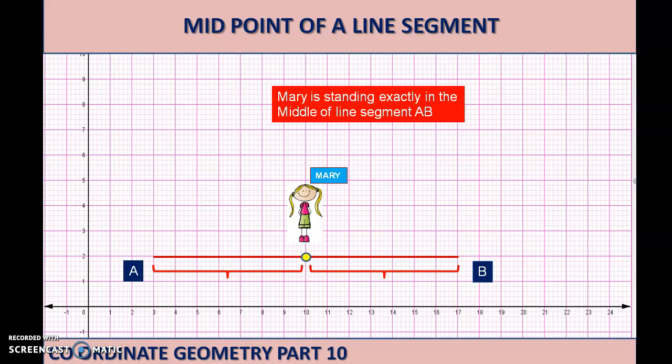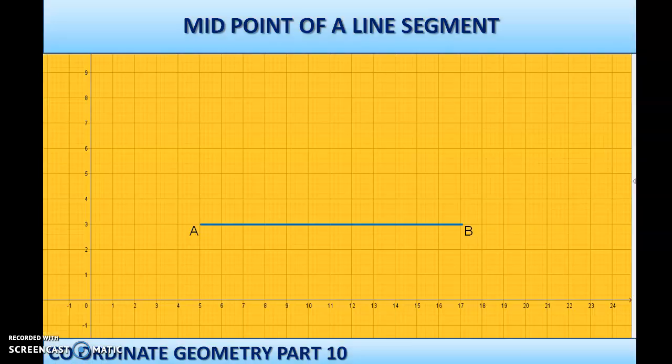So basically, we say that a point is in the middle of a line segment when it is at equal distance from both ends. That is, if the point is P, then the distance from A to P and the distance from B to P should be equal. Only then we say the point is exactly in the middle of the line segment.